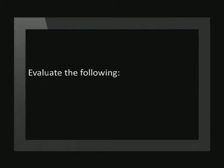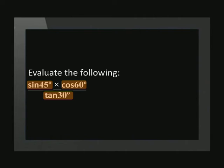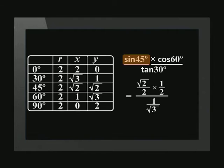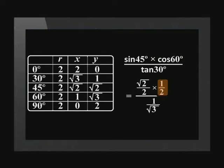Evaluate the following: sin 45 degrees times cos 60 degrees over tan 30 degrees. Now we replace these ratios with the values we can find in the table. Sin 45 degrees is root 2 over 2, cos 60 degrees is 1 over 2, and tan 30 degrees is 1 over root 3.